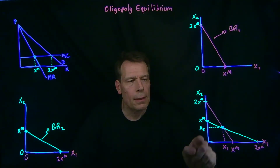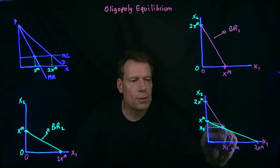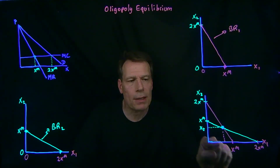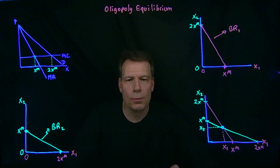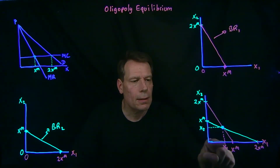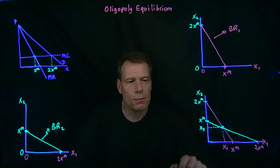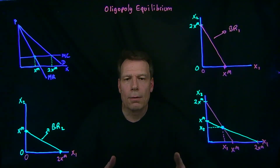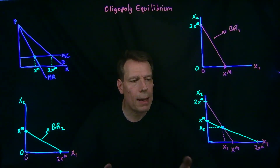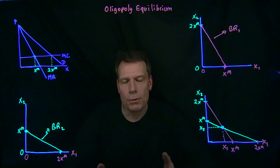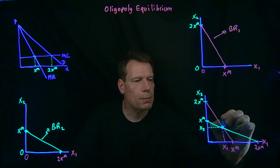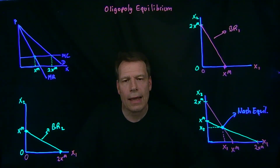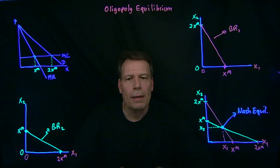From firm 1's perspective, when firm 2 is producing this quantity, its best response — read off of its best response function — is to produce this quantity. So it is in fact best responding to what firm 2 is doing. What about firm 2? Given that firm 1 is producing this quantity, its best response, read off of the green best response function, is to produce this quantity. So it is best responding to what firm 1 is doing. They are best responding to each other. After the fact, they can look back and say we did the best we could given what the other party was doing. So we are indeed at a Nash equilibrium, and that Nash equilibrium is the oligopoly equilibrium in this particular example.